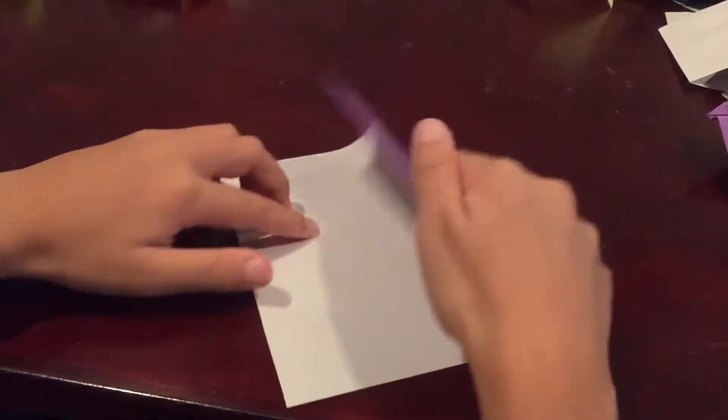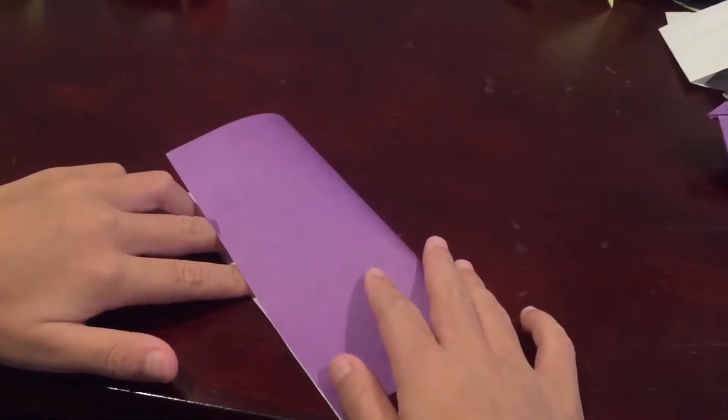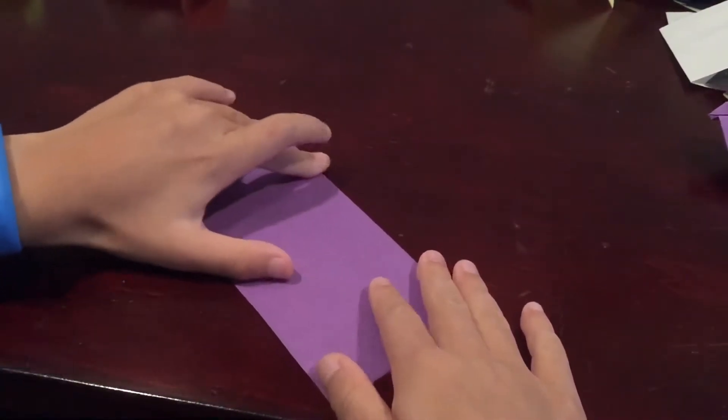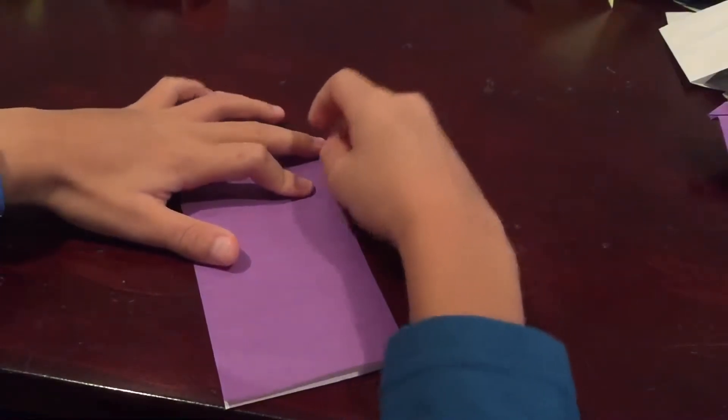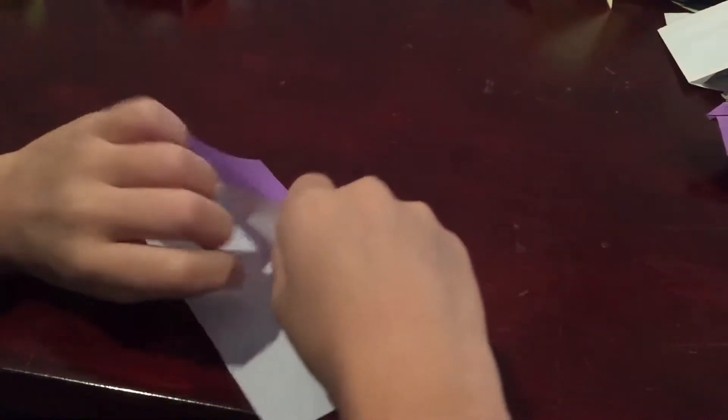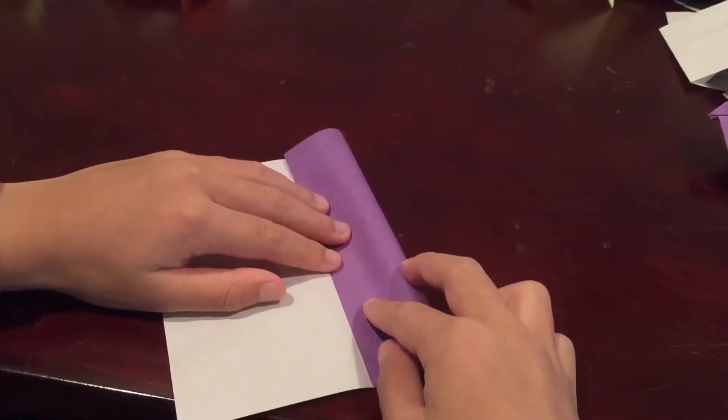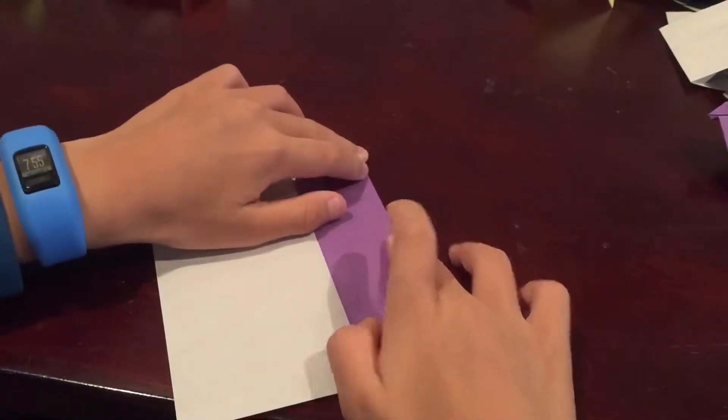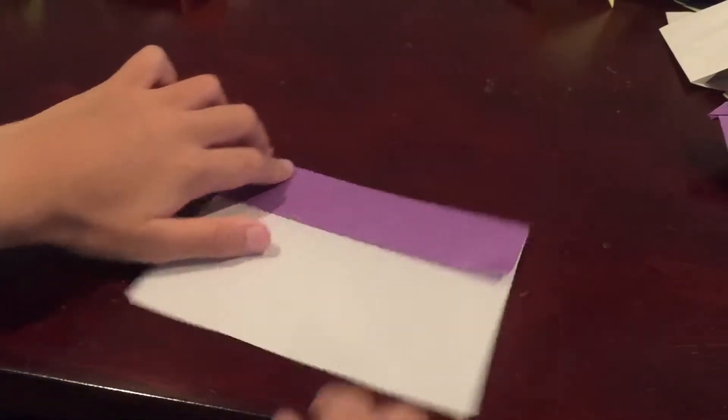Start off right side up and fold this in half and crease it. Open it back up and fold this to the crease. Crease it.